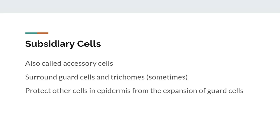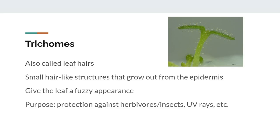Subsidiary cells, also called accessory cells, will sometimes surround guard cells and are a type of specialized epidermal cell. They protect the rest of the epidermal cells from the expansion of the guard cells. Trichomes, also called leaf hairs or epidermal hairs, are epidermal outgrowths that appear as tiny hairs to the naked eye, giving leaves a fuzzy appearance. The purpose of trichomes is to protect the leaf against herbivores, UV rays, and other harmful things. Only some leaves have these, and they are typically surrounded by subsidiary cells as well.